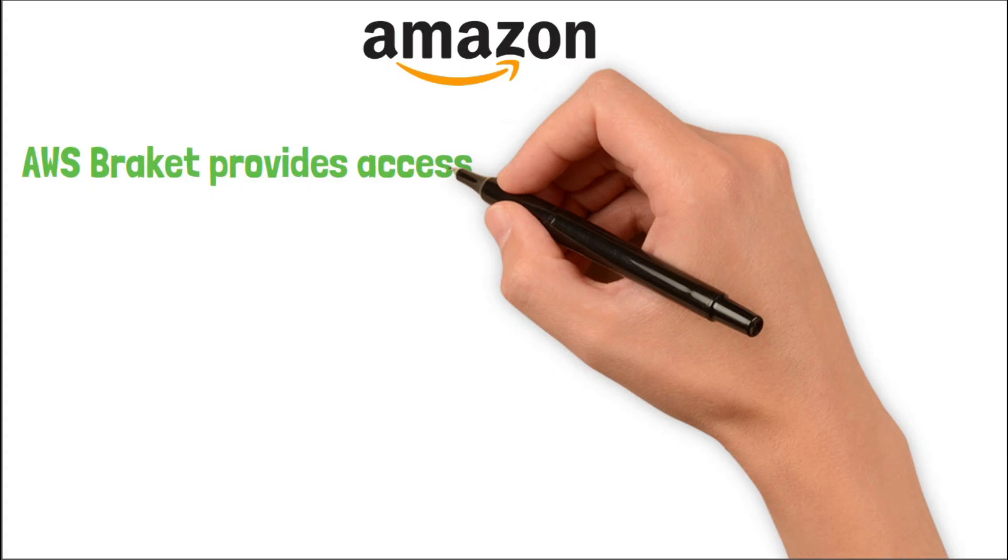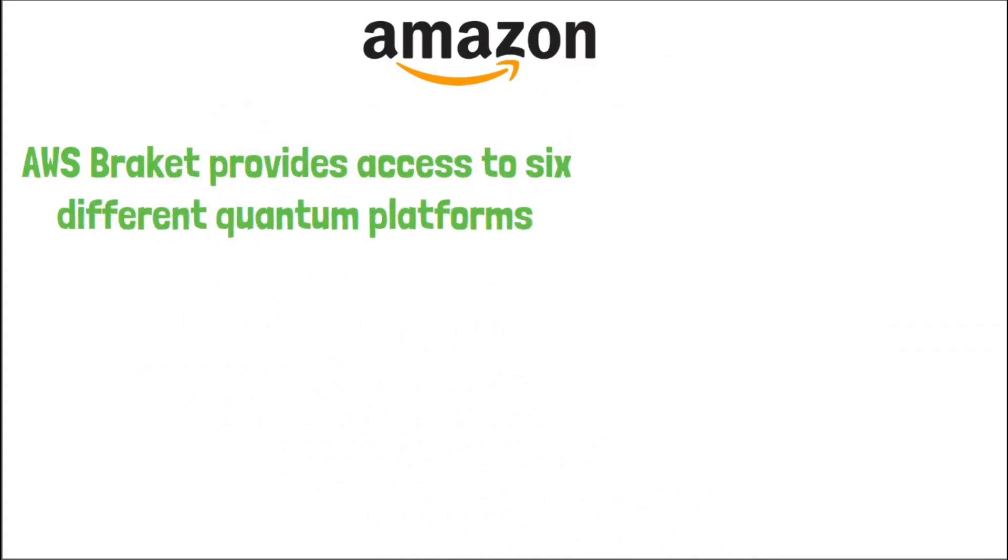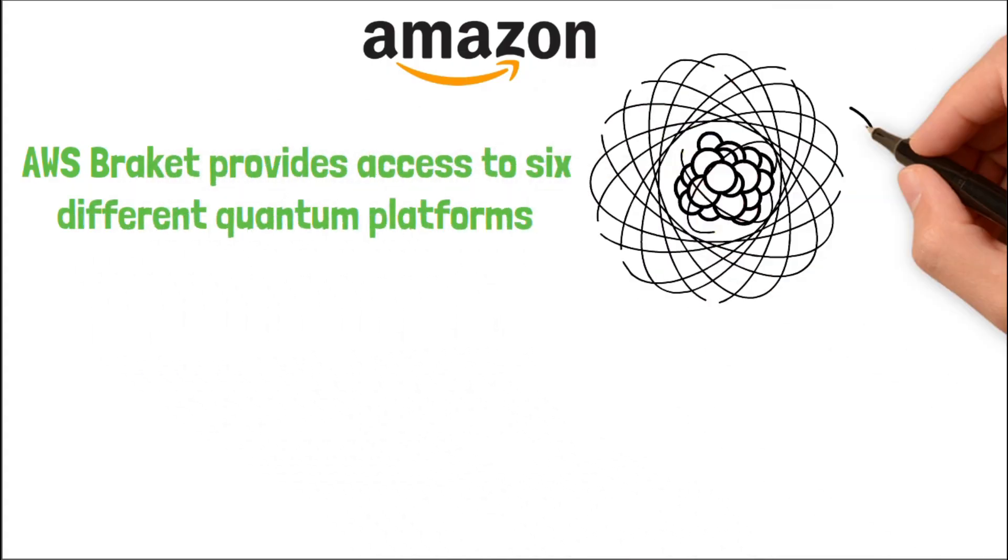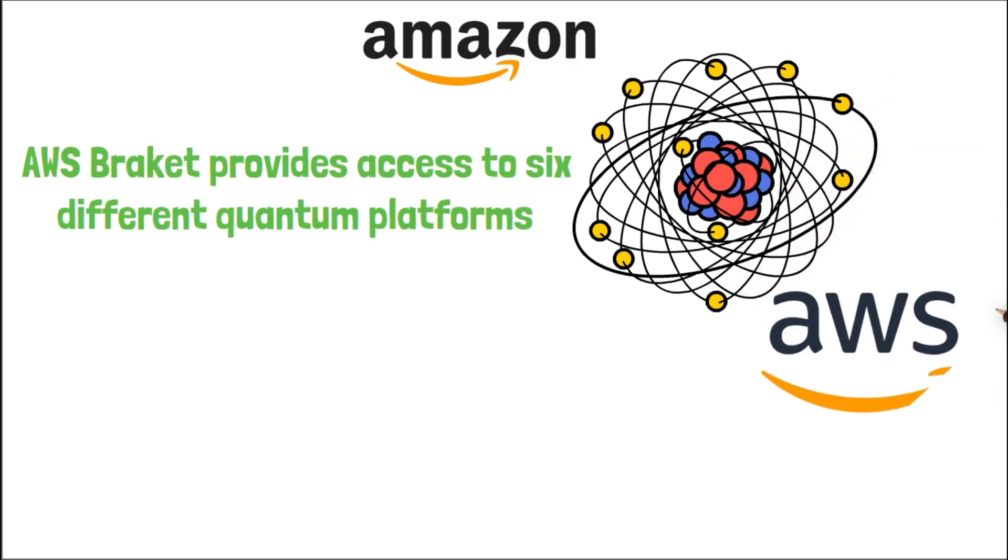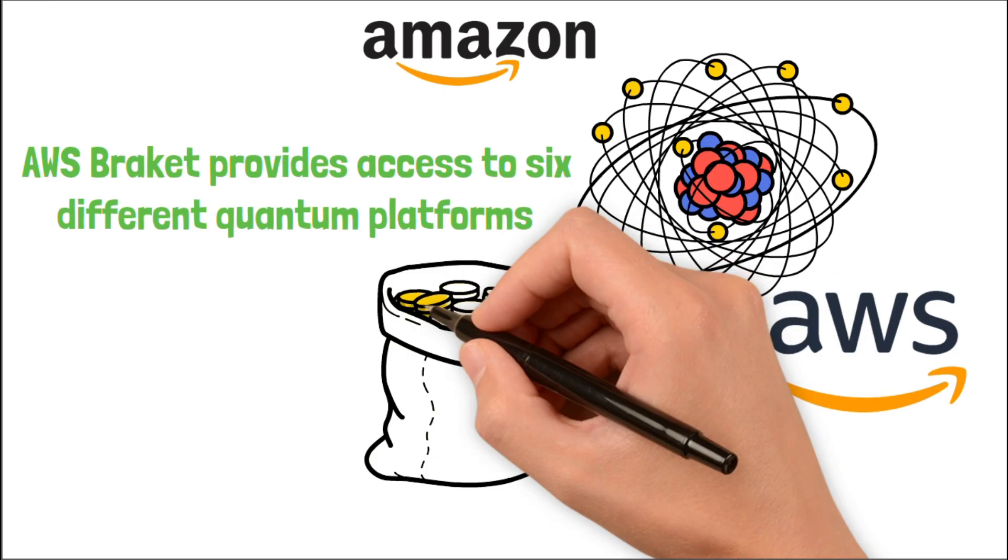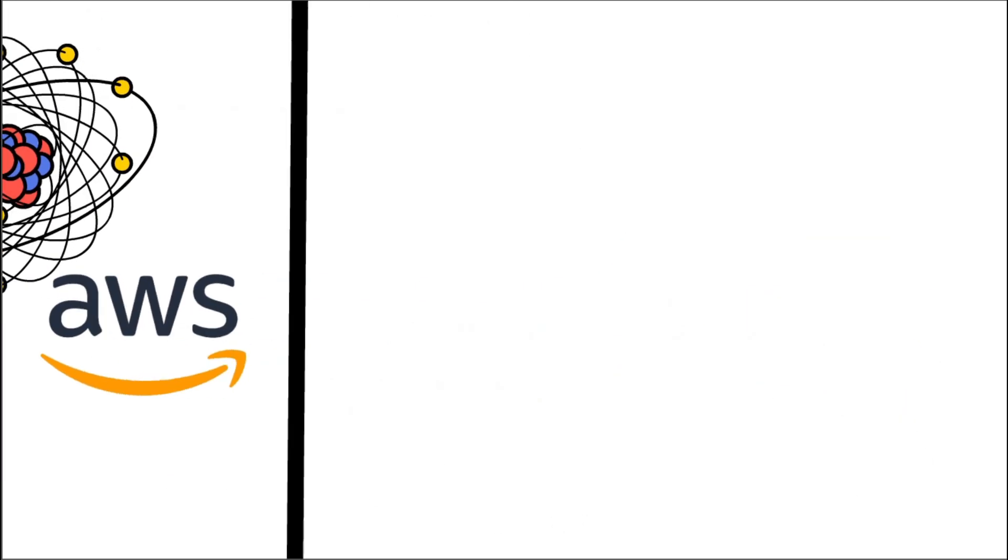Amazon is quietly running the casino. AWS Braket provides access to six different quantum platforms. But the genius? Each quantum job requires hundreds of classical compute hours, all billable on AWS. Whether quantum works now or in 10 years, Amazon gets paid either way.